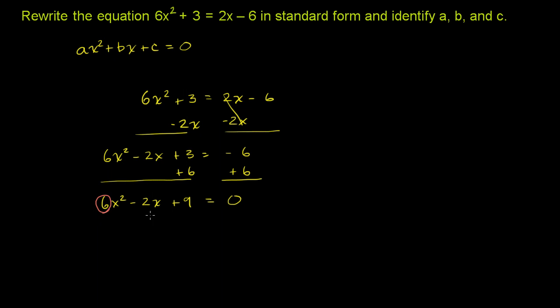So we can say that a is equal to 6. And b is equal to, and this is key, it's not just 2, it's negative 2. b is equal to negative 2.